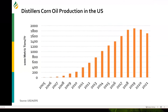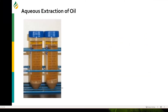If you look at how much distiller corn oil was produced — in 2005 there was a very small amount, and today we are producing close to about 1.8 million metric tons of distiller corn oil in the United States. This was very interesting because this was aqueous extraction of oil in a dry grind plant, and it got a lot of people started doing research in this area.